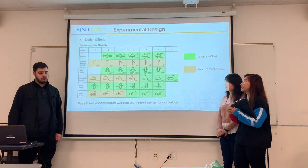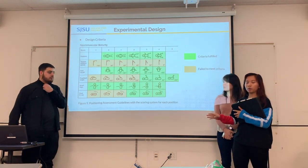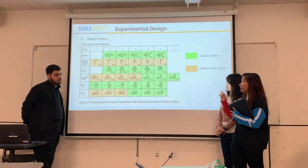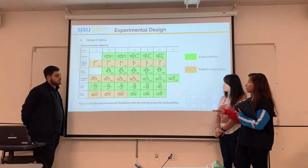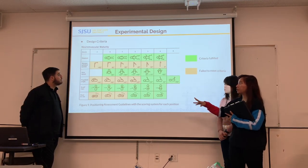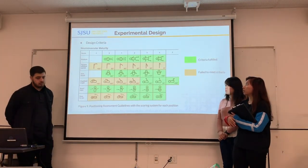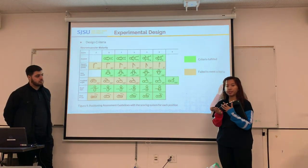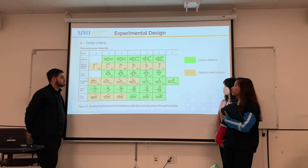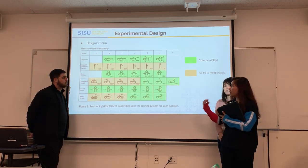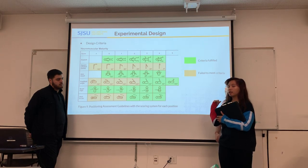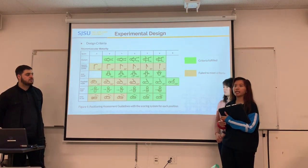That leads us to our design criteria. Everything in green is what we have been able to accomplish in terms of range of motion and what the device can do, and everything in orange/reddish is what we have not been able to accomplish. For example, the device is able to have the legs go outwards in a frog-like motion that hypotonic babies usually exhibit, as well as the range of motion for elbows, how far the feet can go, and the range of motion for the shoulders. This has been verified by our advisor, Dr. Stoker, who tested the device and approved of everything.